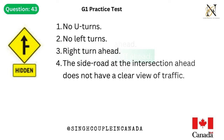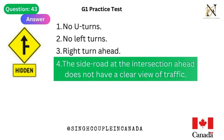Question 43. This traffic sign means: 1. No U-turns. 2. No left turns. 3. Right turn ahead. 4. The side road at the intersection ahead does not have a clear view of traffic. Answer is 4. The side road at the intersection ahead does not have a clear view of traffic.